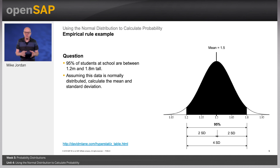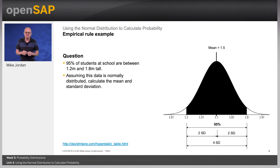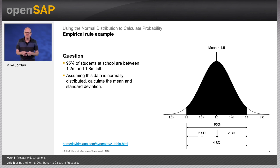The solution: the mean equals 1.2 plus 1.8, divided by 2, and so that equals 1.5 meters. 95% is two standard deviations either side of the mean, a total of four standard deviations. Therefore, one standard deviation equals 1.8 meters minus 1.2 meters, divided by 4, which equals 0.15 meters. This can then be visualized on a normal curve, as you can see on the slide.